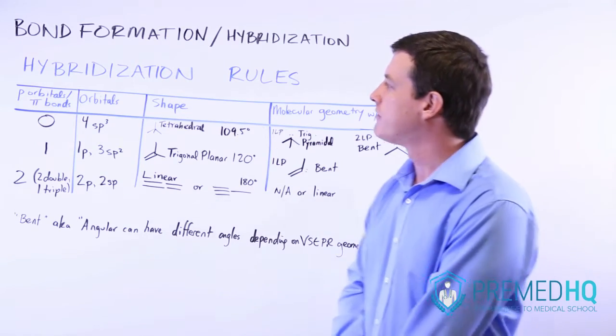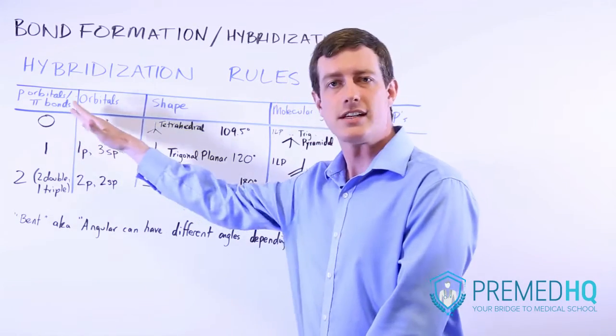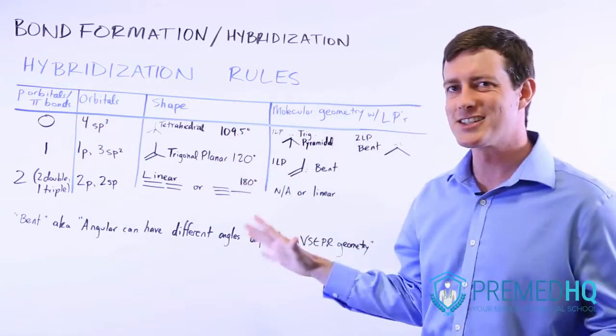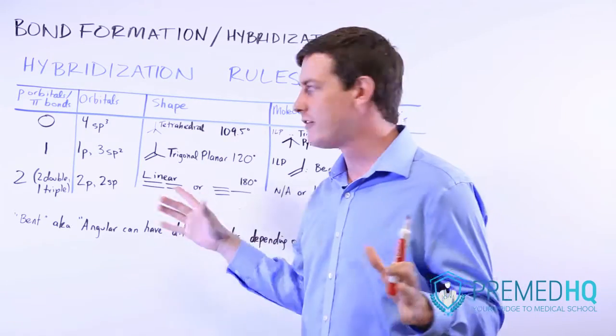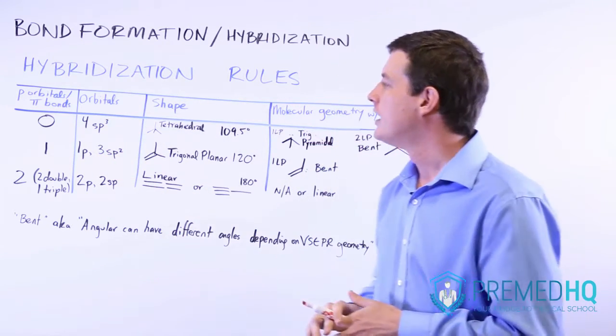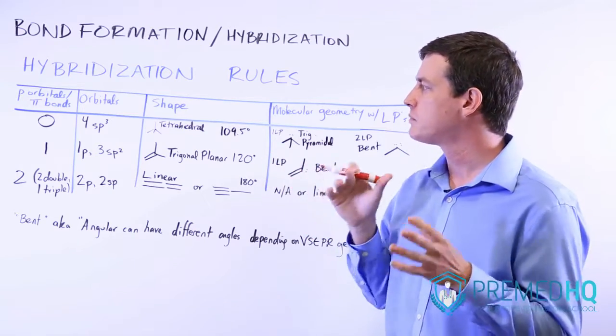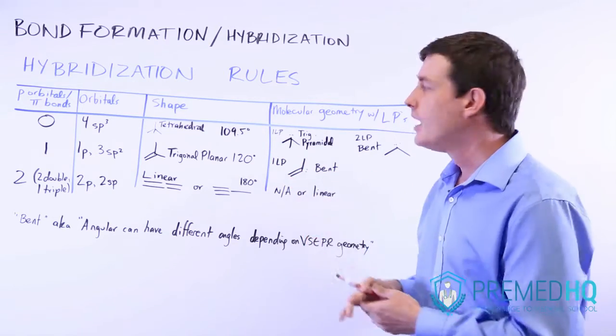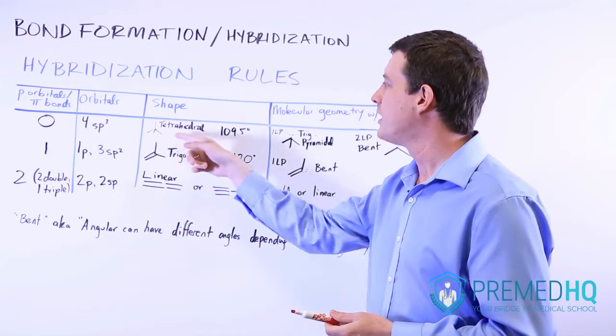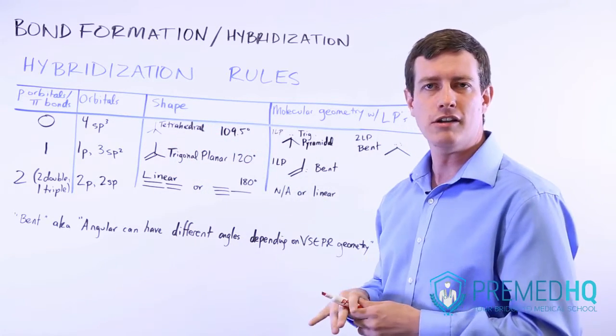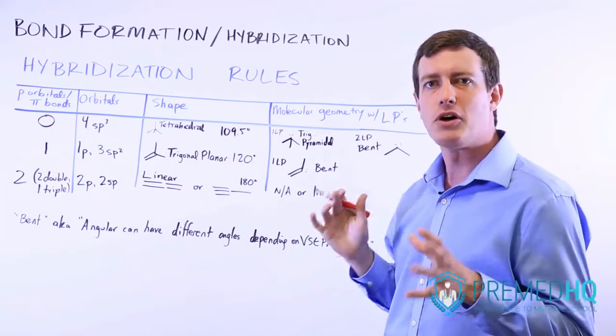If you have no pi bonds necessary, if there's no double bonding that's occurring, then all of the s and p orbitals can hybridize. And so what you get left with is four different sp3 orbitals. And that takes a tetrahedron shape because of the valence shell electron repulsion theory.